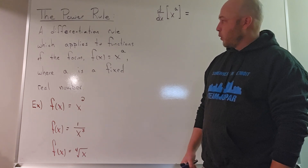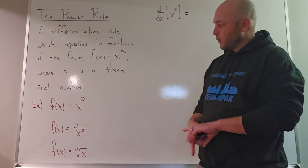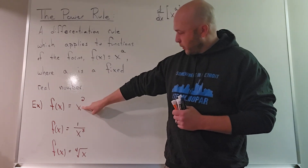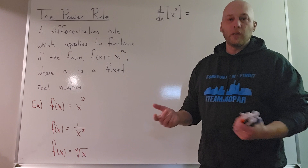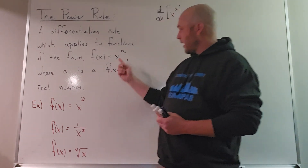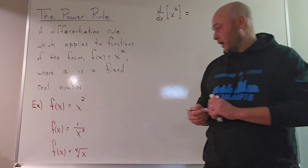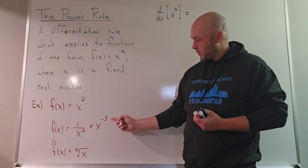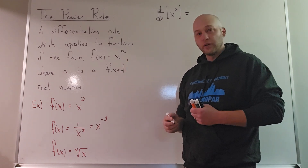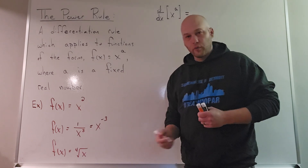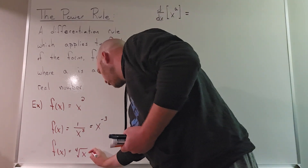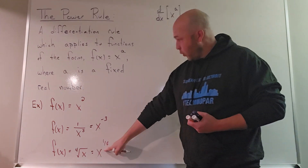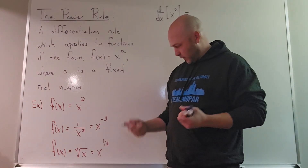Let's look at some examples for which the power rule will apply. Notice x squared — the standard parabola, the standard quadratic — variable x, exponent of 2. Similarly x to the 3rd, x to the 4th. How about 1 over x to the 3rd? We can rewrite that as x to the negative 3rd, so the power rule applies; the exponent is negative 3, a fixed real number. How about the 4th root of x? A 4th root is equivalent to the 1/4 power, so I can write it as x to the 1/4, which has the form x to the a.